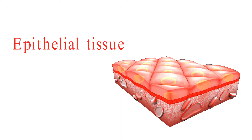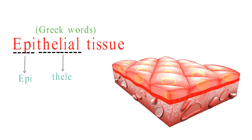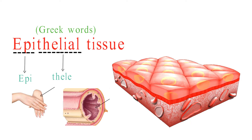The term epithelium comes from the Greek words epi and theil. This is the thin tissue forming the outer layer of a body's surface and lining the alimentary canal and other hollow structures.